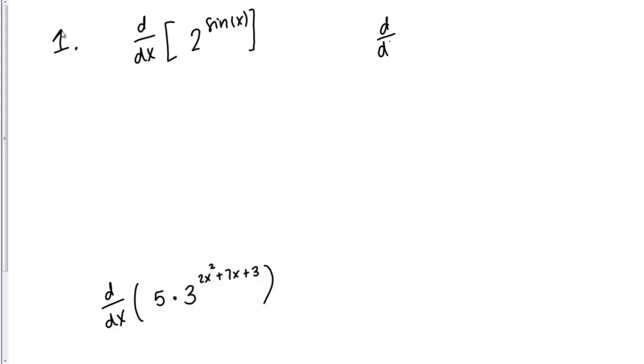If this was just the derivative of 2 to the x, I would say the answer was 2^x times the natural log of 2. Here instead, I have 2 raised to the sine x power. All we have to do is think of this as a composition of functions. You can think of sine as your inner function. You're raising 2 to the sine x power. Whenever we have a composition of functions, we just use the chain rule.